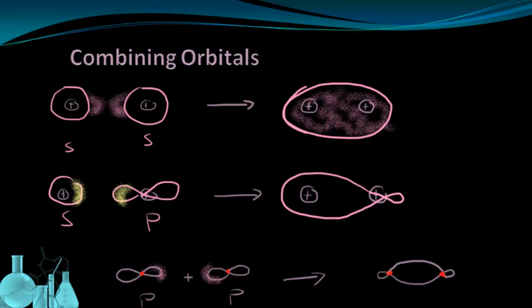Now, notice in all of these cases, the region of overlap was directly between the two nuclei. That's because the orbitals were considered in line with each other. So we have an inline overlap of orbitals to create the molecular orbitals we see here on the right.